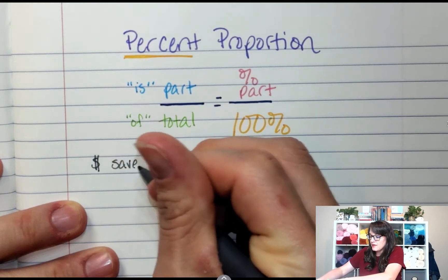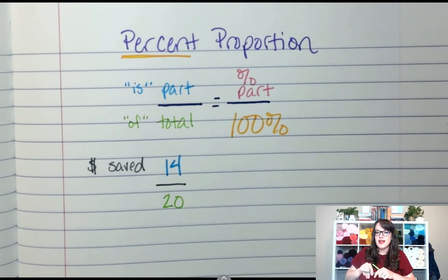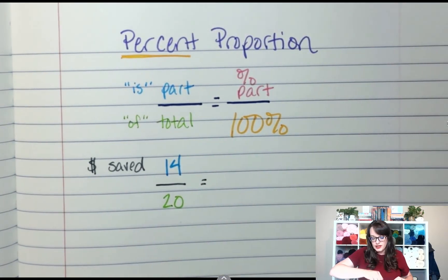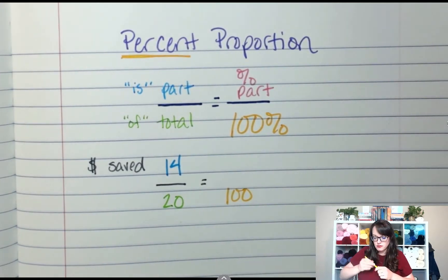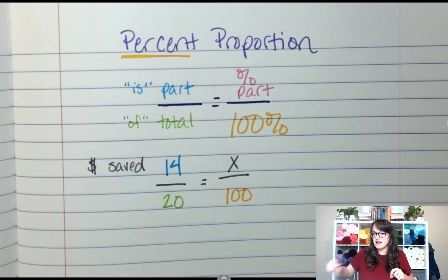This is going to tell me the percent I saved. So equals and 100 is always going to go in that bottom right. And I don't know the percent. This was the part I needed to figure out so that I could sell him on this. Like, this is a really good deal.